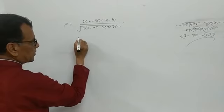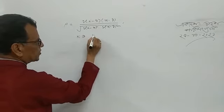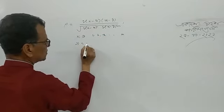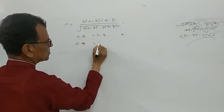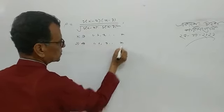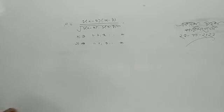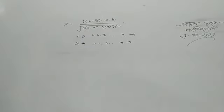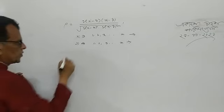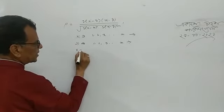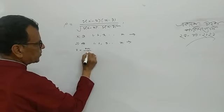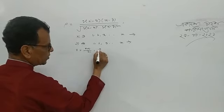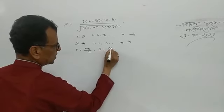So x1, x2, x3 up to xn — the chromic (rank) numbers are 1, 2, 3, 4 up to n. And yi equals 1, 2, 3 up to n as well. So x and y are both first n natural numbers. We know x-bar is equal to (n plus 1) divided by 2, and y-bar is equal to (n plus 1) divided by 2.